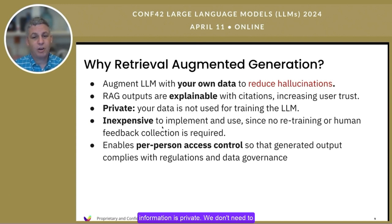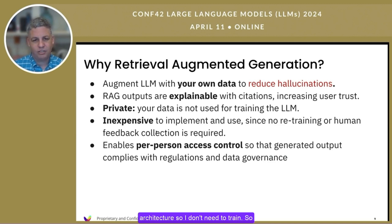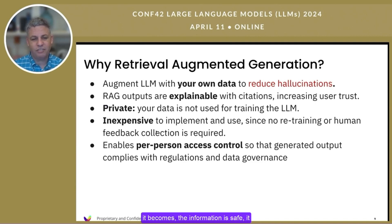The information is private. We don't need to train in RAG — I haven't seen any training or fine-tuning step in the architecture. So you don't need to train, which means the information is safe. It doesn't leak into any future LLM.